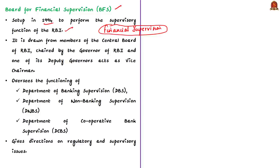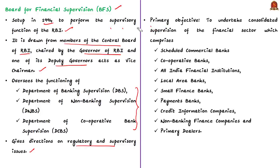The Board is drawn from the members of the Central Board of the Reserve Bank of India. It is chaired by the Governor of RBI and one of its Deputy Governors acts as Vice Chairman. This Board for Financial Supervision oversees the functioning of the Department of Banking Supervision, Department of Non-Banking Supervision, and Department of Cooperative Bank Supervision, and gives directions on regulatory and supervisory issues. The primary objective of the Board is to undertake consolidated supervision of the financial sector, which comprises scheduled commercial and cooperative banks, all-India financial institutions, local area banks, small finance banks, payment banks, credit information companies, non-banking finance companies, and primary dealers.